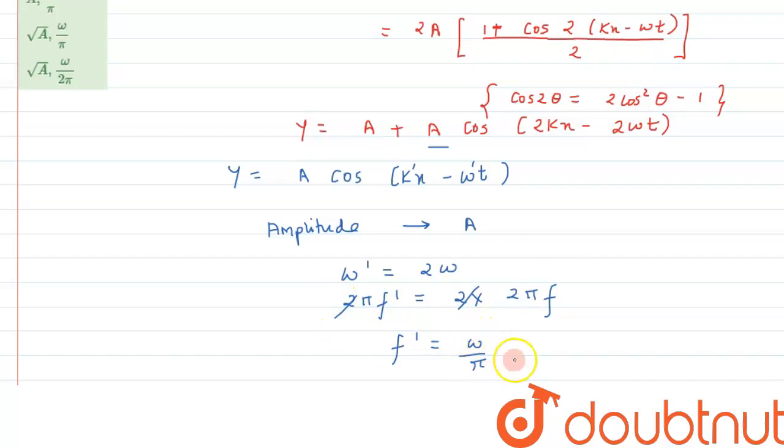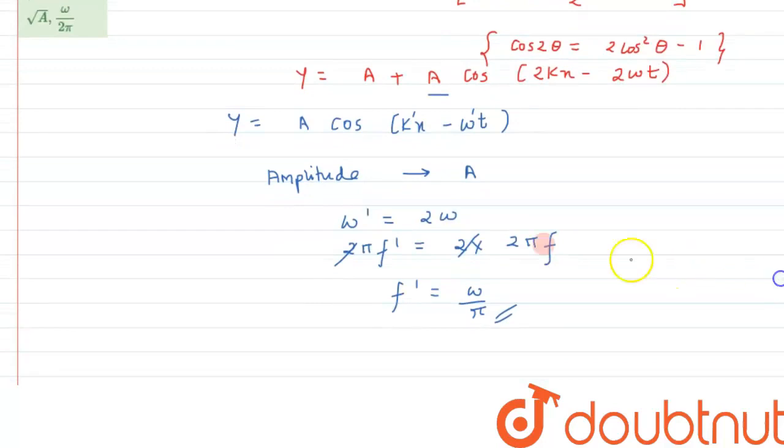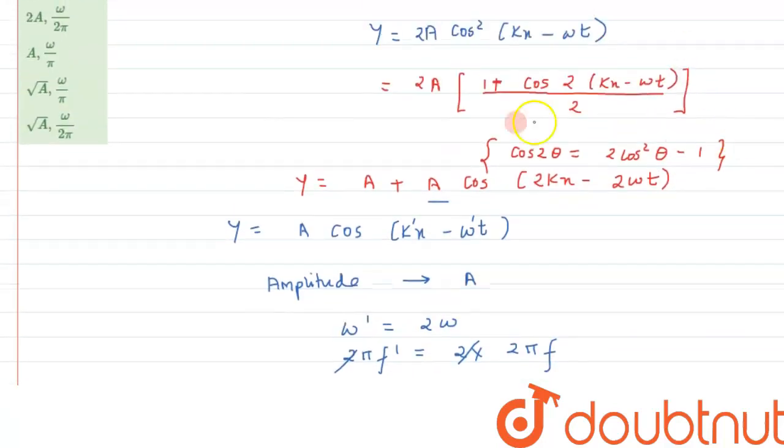Since this 2 and 2 will get cancelled out and instead of 2 pi f we are putting it as omega only and this pi will come here, so the frequency we are getting will be omega by pi and the amplitude we have got as a, so the correct option matching with this is option b.